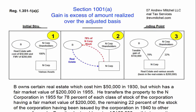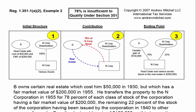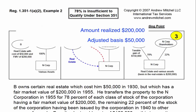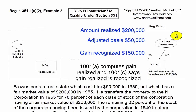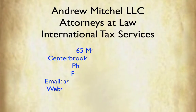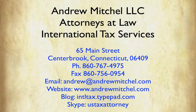Section 1001A generally provides that gain from the sale or other disposition of property is the excess of the amount realized over the adjusted basis. In this example, the adjusted basis was $50,000 and the amount realized by B was the $200,000 of shares in Corp N that he received. Thus, the gain recognized was $150,000.